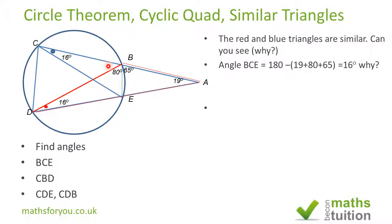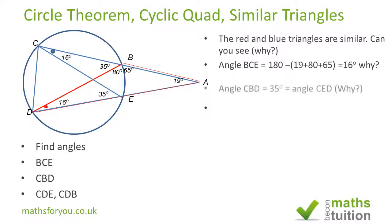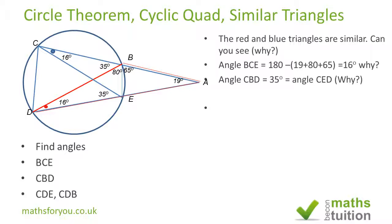Next we want to find angle CBD. This time we use our knowledge of angles on a straight line, which add up to 180 degrees. So this angle has got to be 180 minus 80 minus 65, and that gives us 35 degrees.